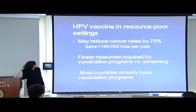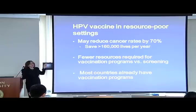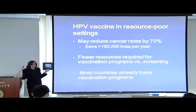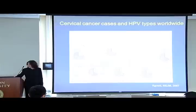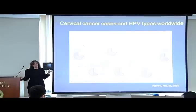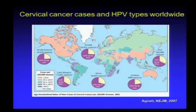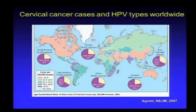Regarding vaccination in lower-resource countries: theoretically vaccination could reduce cervical cancer rates by 70%. It's much easier to vaccinate kids while they're in school than to conduct screening rounds, and most countries already have vaccination programs of some sort. Looking at cervical cancer cases around the world, somewhere between 65 and 75% are related to HPV 16 and 18—remarkably consistent globally—suggesting that if everyone could be vaccinated, we could save many lives from cervical cancer.